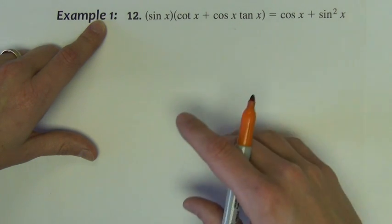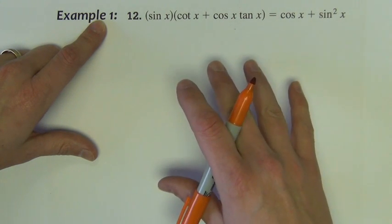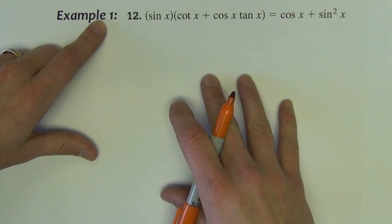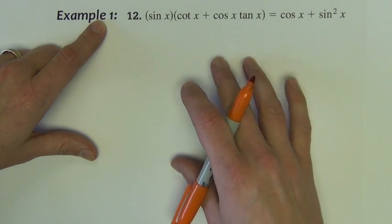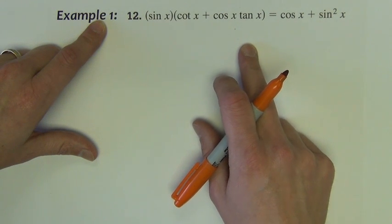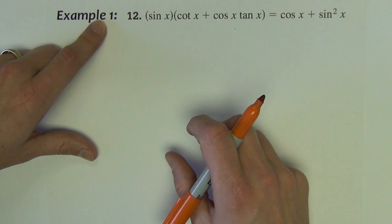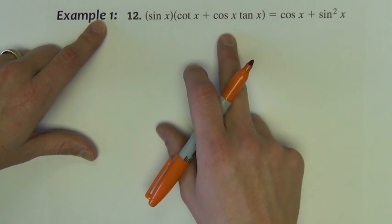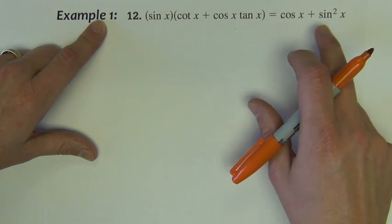So as we look at any problem, we have to ask ourselves first, which side of the equation do we want to work with? Which side is more complicated? I would say for this particular problem, the left side is more complicated because there are more terms there. We see parentheses there. So I might start on this side. So what I'm going to try and do is make this side of the equation look like this side.